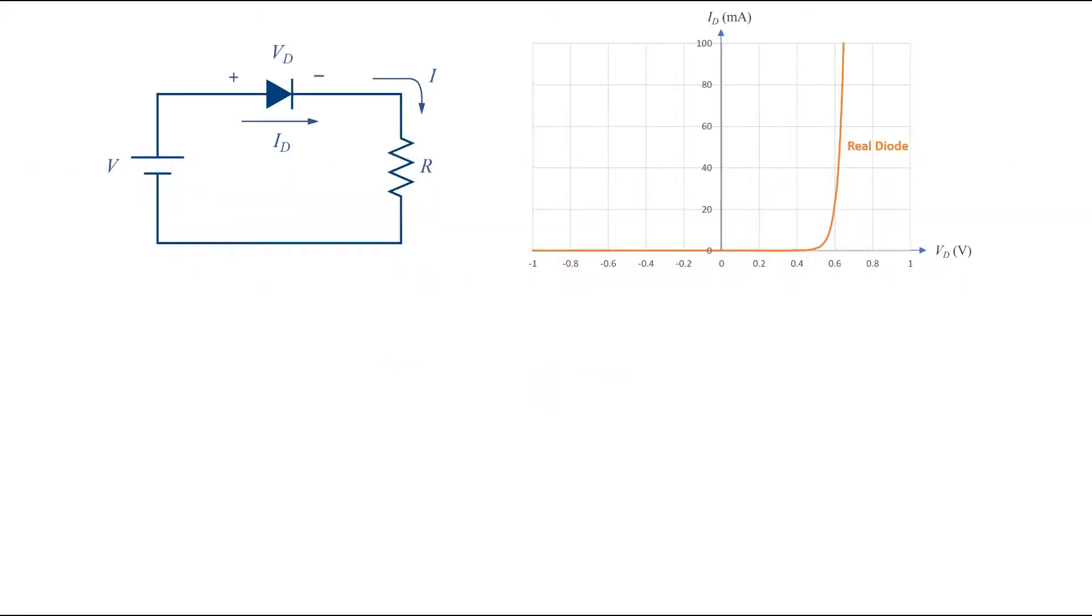As you know, the current-voltage relationship in a PN junction diode is described by an exponential function which is nonlinear. If we use the characteristics of a real diode, we need to solve a nonlinear equation which does not have any analytical solutions.